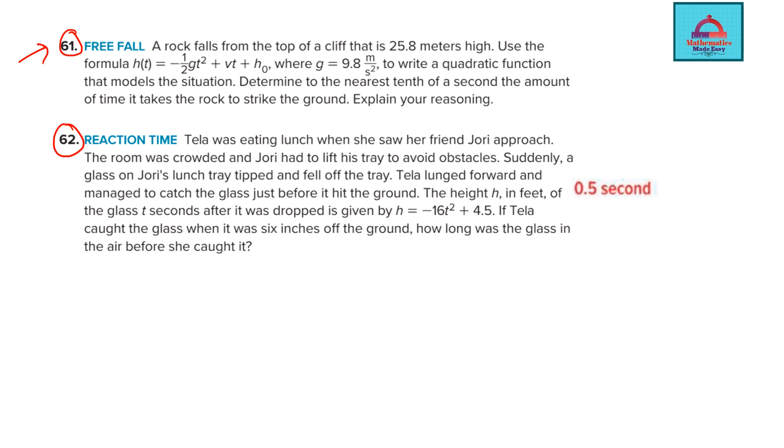So a rock falls from the top of a cliff that is 25.8 meters high. So this height is already given to you. So you can use your H0 as 25.8 meter. Just highlight the important information. This is very easy question because the formula is already given to you in the question. The value of G is given to you. Just write the quadratic function that models the situation.